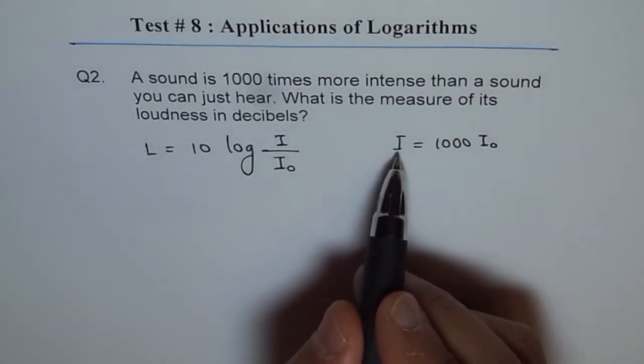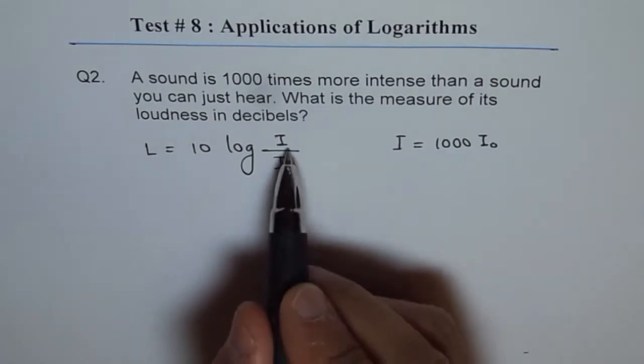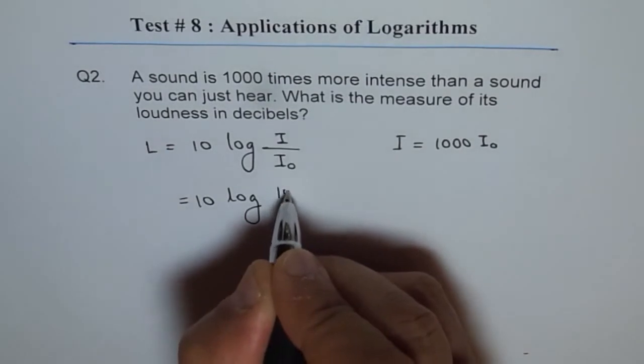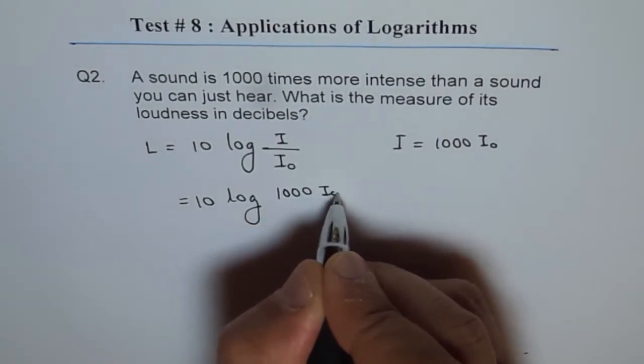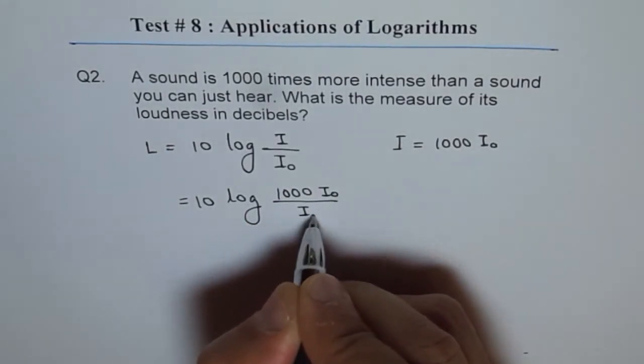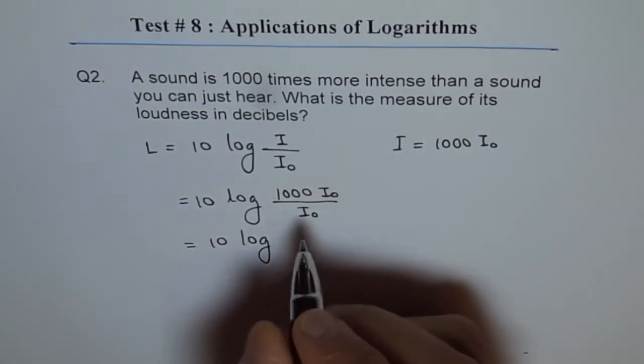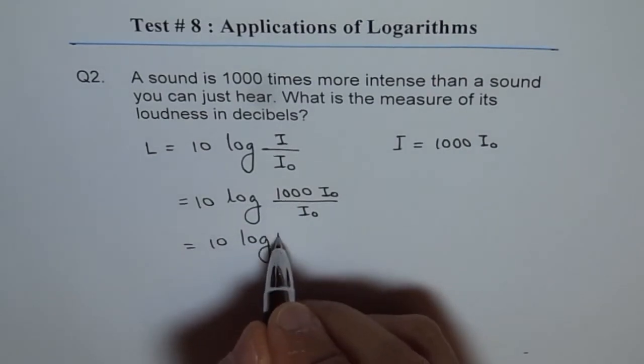So we can substitute the value of I as thousand I₀ here. So what do we get? We get 10 times log of thousand I₀ over I₀. Which is 10 times log of—so I₀ I₀ cancels—thousand.